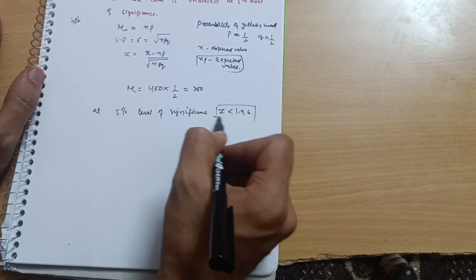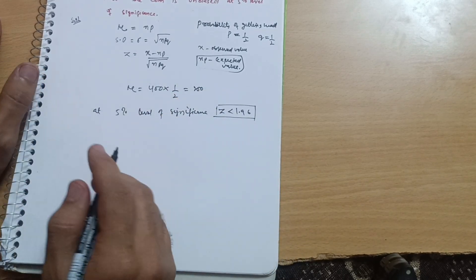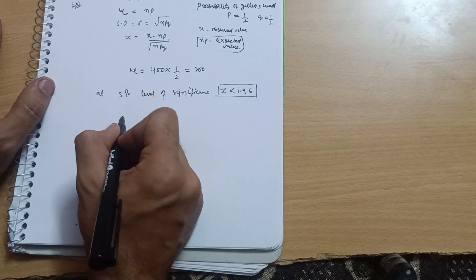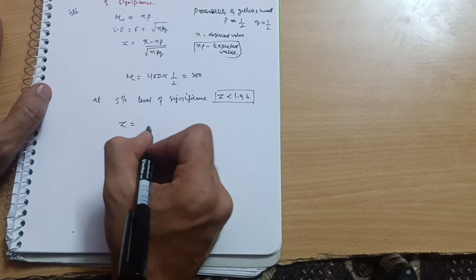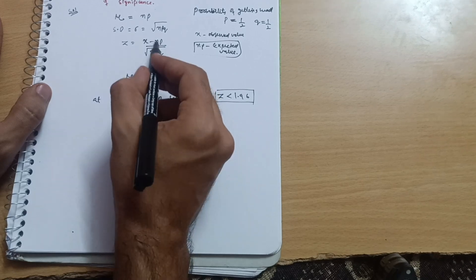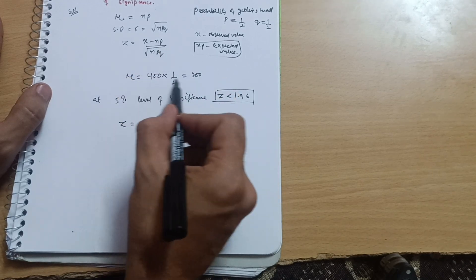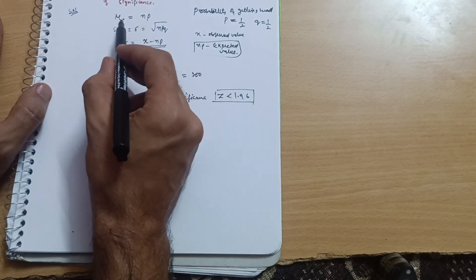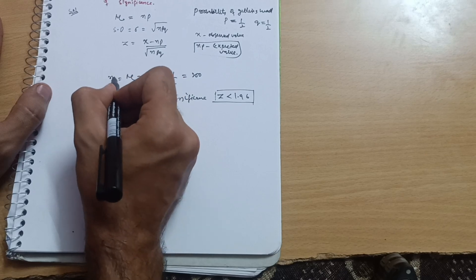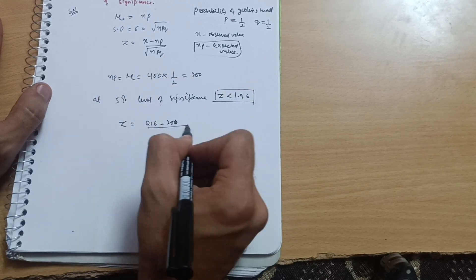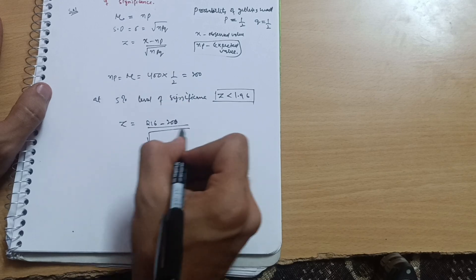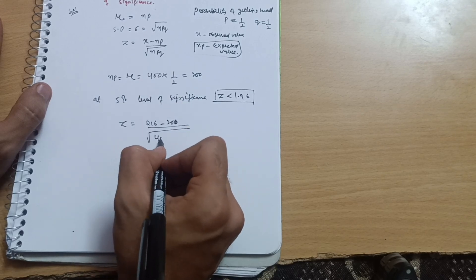Let us see what will be the value. Z equals x, what is the observed value, that is 216, so 216 minus NP. NP we are getting here as mu, mu equals 200. Mu equals NP, I can write NP equals mu, 200. So 200 I can write upon under root of NPQ.